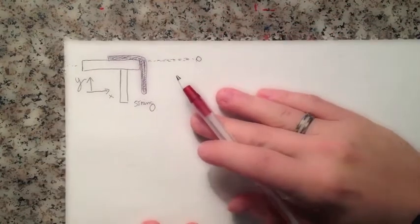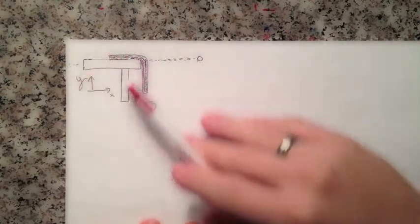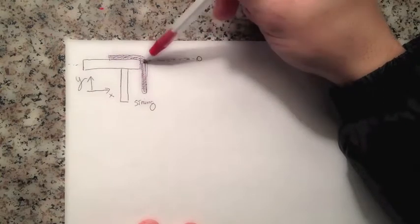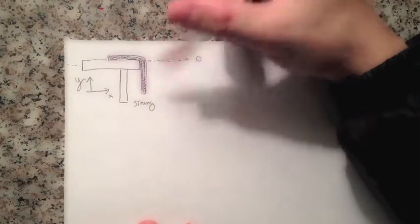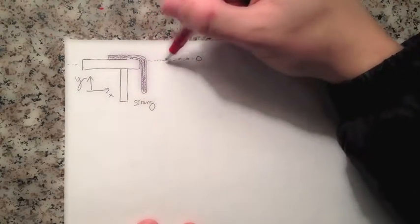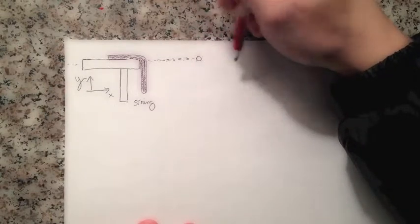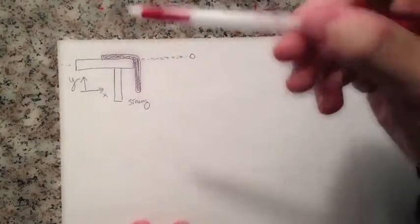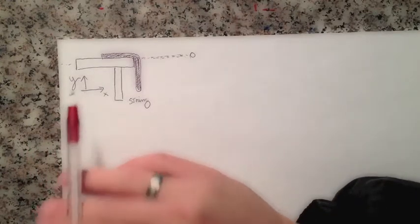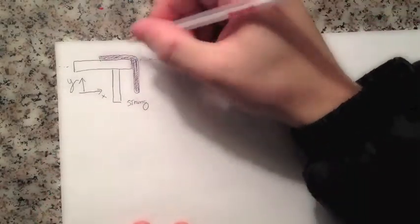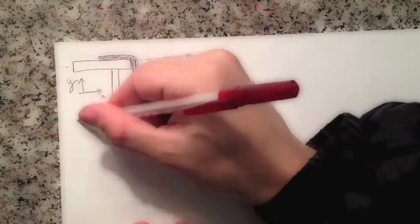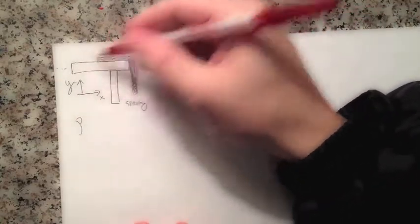Let's take a look at this sketch to see what we're talking about. We have a table and we have a string that starts to fall down, as we can see in this picture, and we want to know the velocity and the equation of motion of this string. We're going to take this as the zero level for the potential energy. The string has a linear density, we're going to call it rho, and the total length is going to be L.